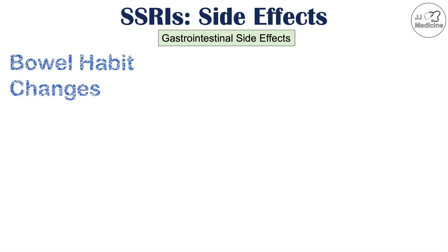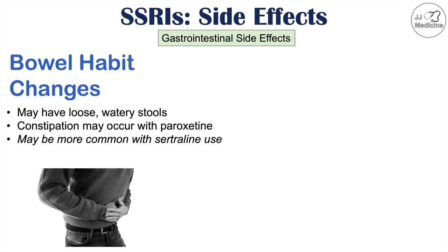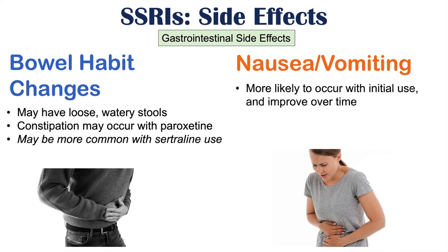Other gastrointestinal side effects include bowel habit changes — having loose or watery stools, so diarrhea can be a side effect of SSRI use. Constipation may occur, but that is going to most often occur with paroxetine or Paxil. These bowel habit changes, especially diarrhea and abdominal pain, may be more common with sertraline or Zoloft use. Nausea and vomiting may also occur, more likely with initial use and may improve over time, and again more common with sertraline.